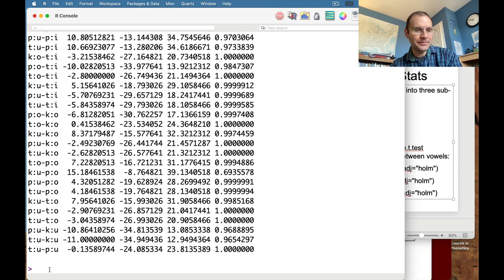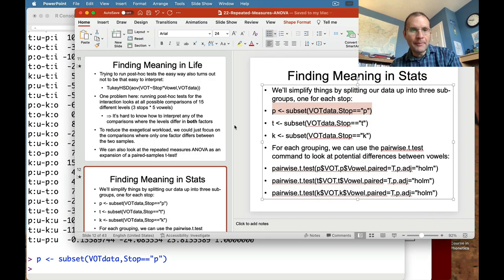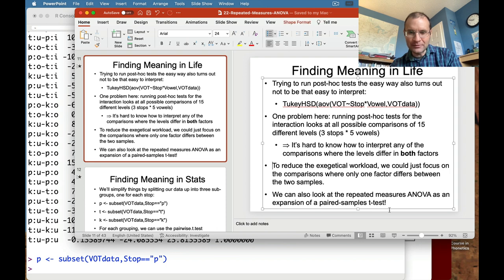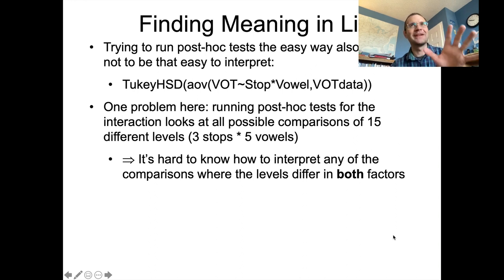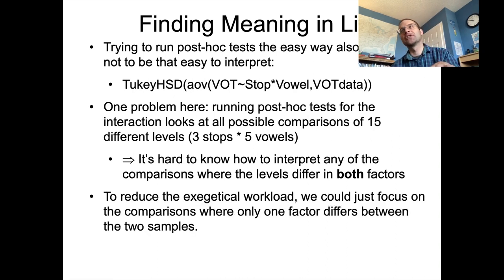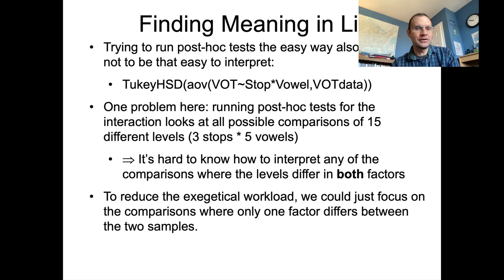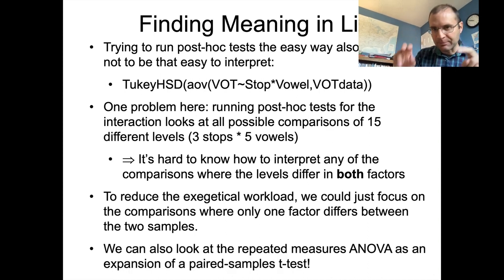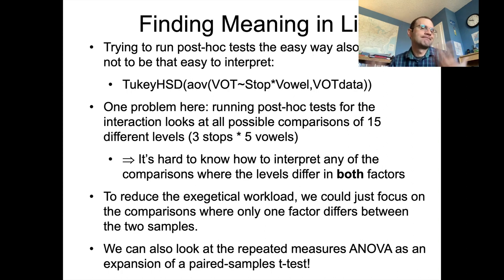We're going to simplify things by splitting our data into subgroups and focusing on comparisons where only one factor differs between the two samples. The point to make is that it's hard to interpret comparisons where the levels differ in both stops and vowels. It would be easier to say: if I keep stop place of articulation constant, how does vowel affect the VOT, or conversely, if I keep the vowel constant, how does changing the stop place affect VOT? So we want to focus on comparisons where only one factor differs between the two samples.